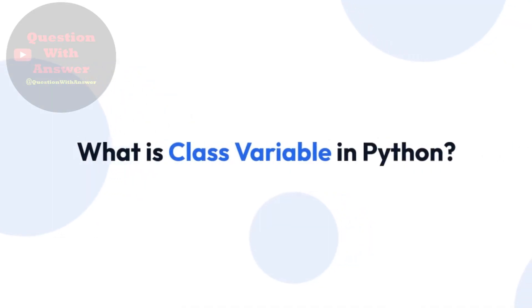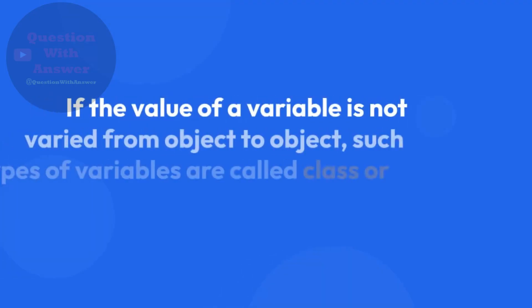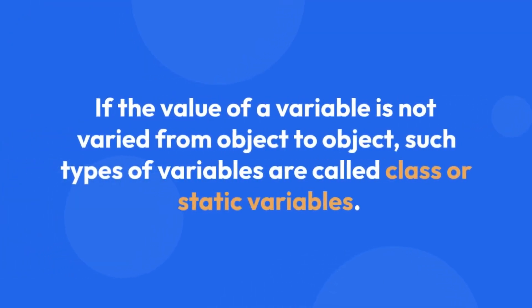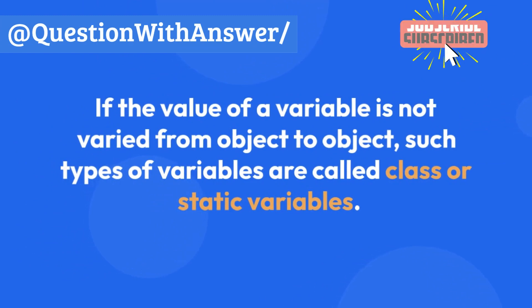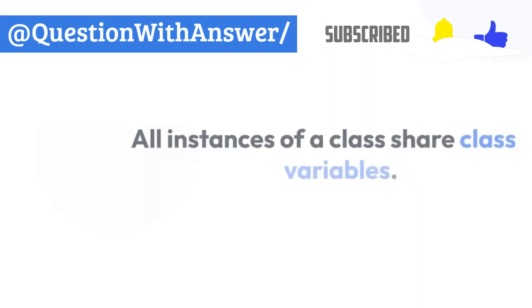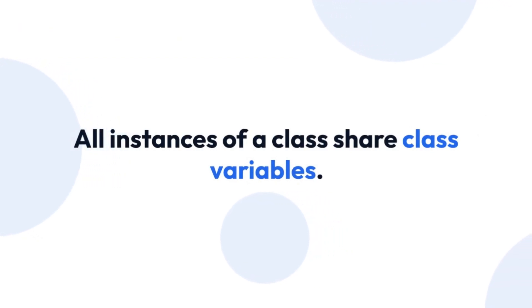What is class variable in Python? If the value of a variable is not varied from object to object, such types of variables are called class or static variables. All instances of a class share class variables.